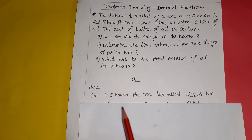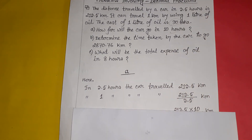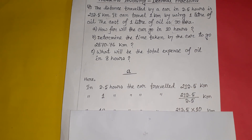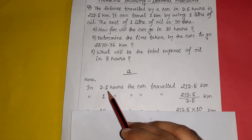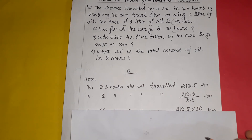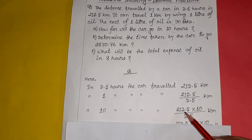In 3.5 hours the car can travel 213.5 kilometers. So in 1 hour it can travel 213.5 divided by 3.5 kilometers. Then for 10 hours we multiply that result by 10. This gives us the total distance for 10 hours. The total is obtained by first dividing and then multiplying — that is the unitary method approach.